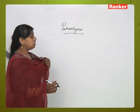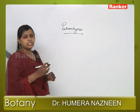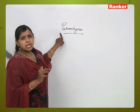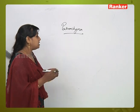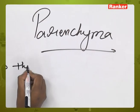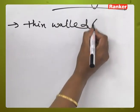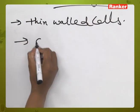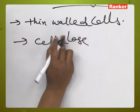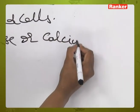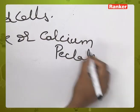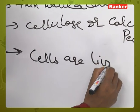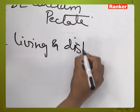Parenchyma cells are a simple tissue — a collection of similar cells that perform a common function. Parenchyma is a simple tissue with thin-walled cells. The cell wall of parenchyma is made up of cellulose or calcium pectate. Parenchyma cells are living cells with a distinct nucleus.